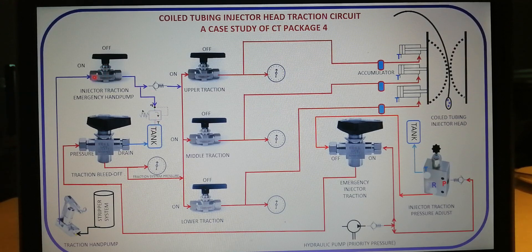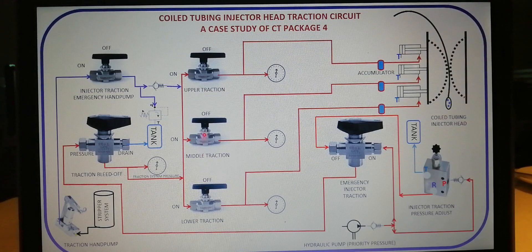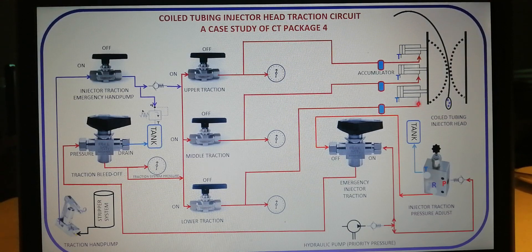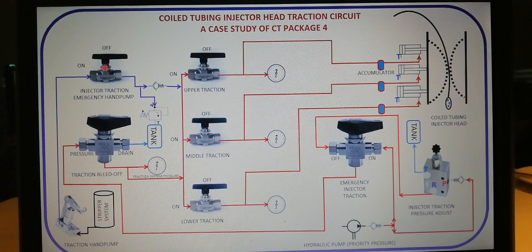Keeping this valve on allows flows of hydraulic to each of the traction on and off control valves, while each of these valves diverts the hydraulic flows to their respective active ends of the traction cylinders on the injector head. Note: under normal operation, this valve must also remain in the off position.